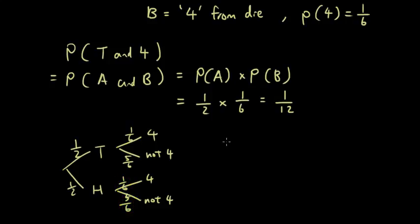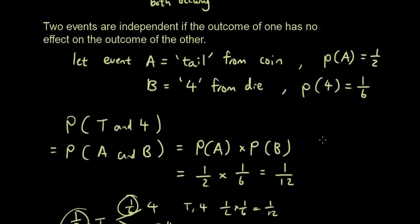And then you multiply along the branches, so it says we want tail and 4, so it's tail times the probability of getting a 4. So that's half times 1 over 6, which is 1 over 12, so it's exactly the same. But with the formula, that helps you because then you don't have to draw a tree.